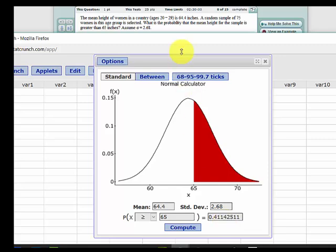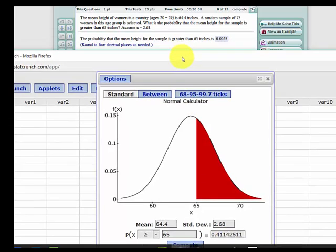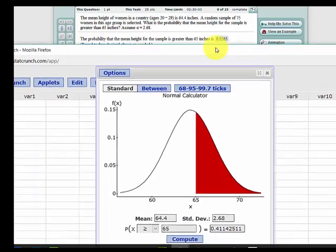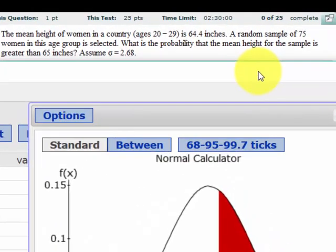Is that the right answer? Bring it down. No. They say 0.0263. What did we do wrong? Well, the clue is right here that we've got a random sample of 75.